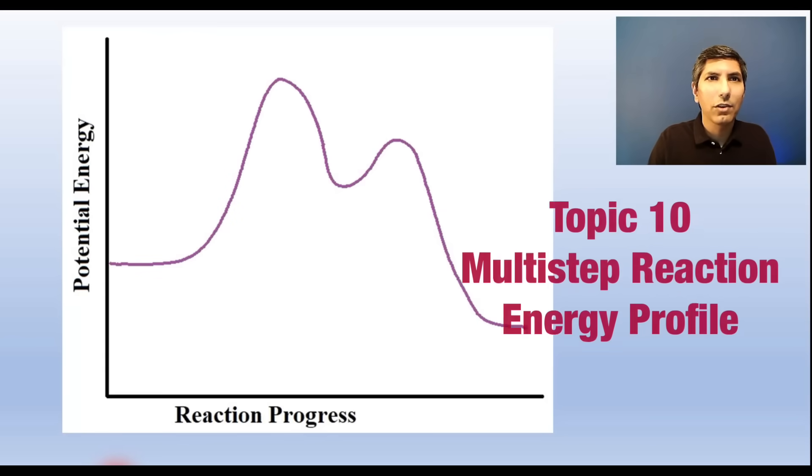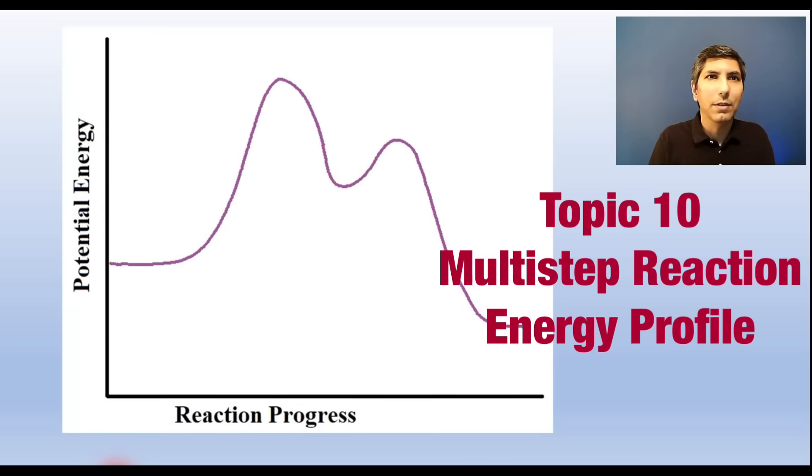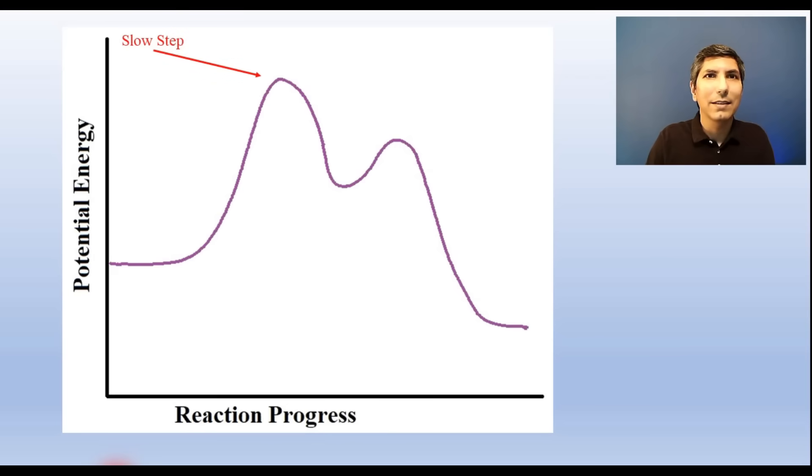A multi-step reaction will have an energy profile with multiple humps like you see here. The hump that rises the highest is the slowest step. So that's the first step in this example. The lower peak is the faster step. Since there are two steps, we will have two transition states, and it will be almost impossible to isolate either one. The reaction intermediate will exist in this valley. And once the intermediate is formed, it'll be easier for it to form the products than the reactants, since the activation energy for the forward second step is less than the activation energy for going backwards toward the reactants.